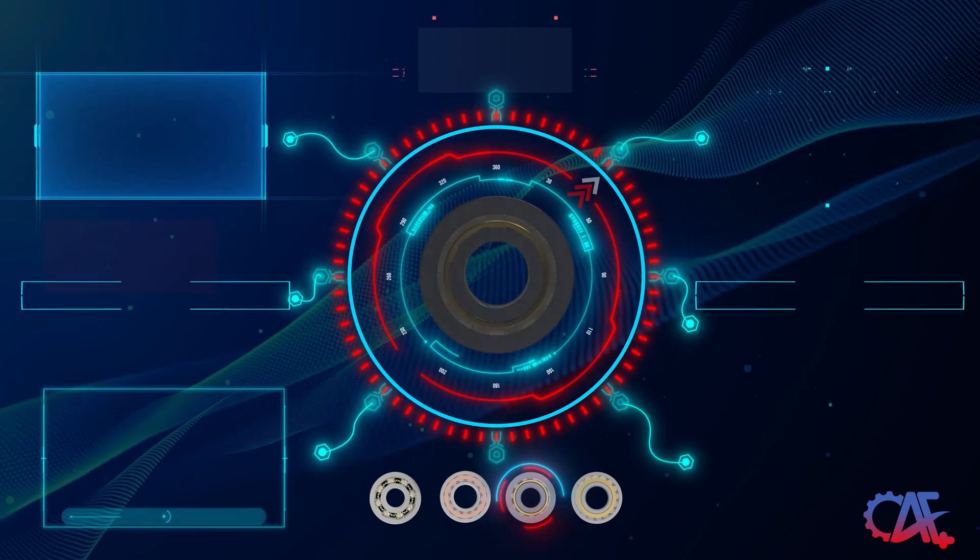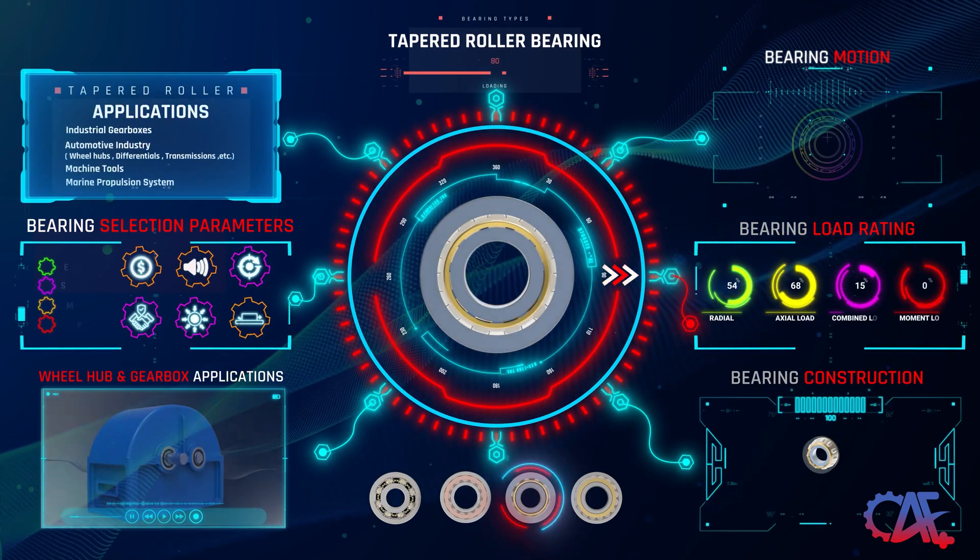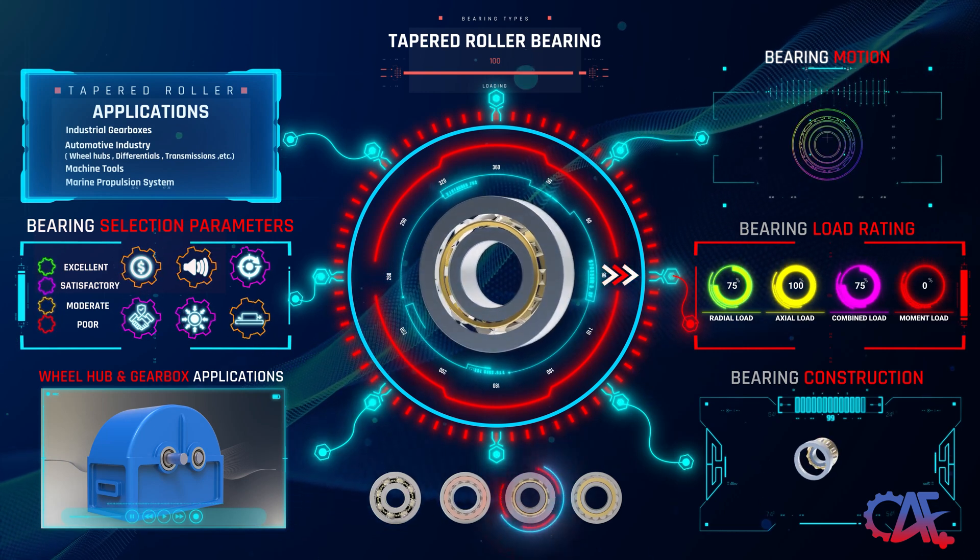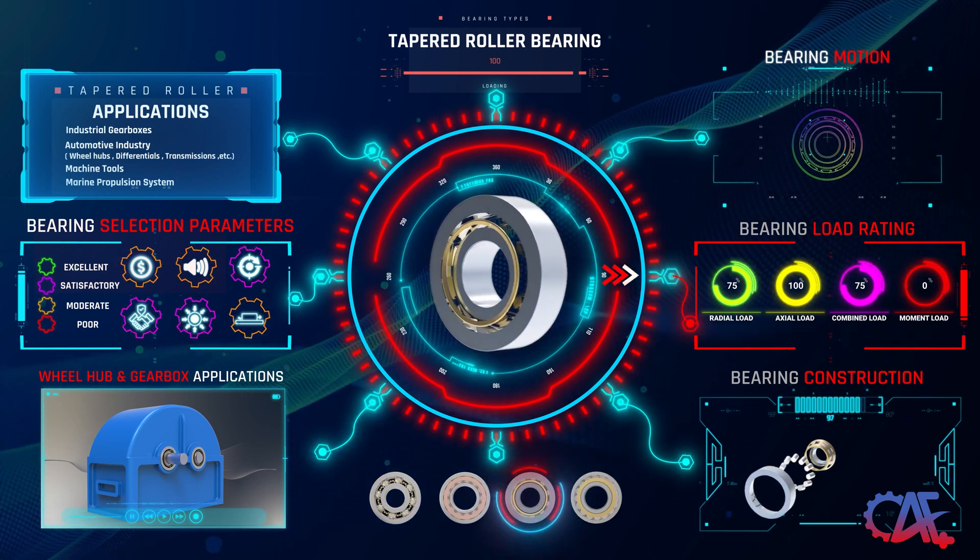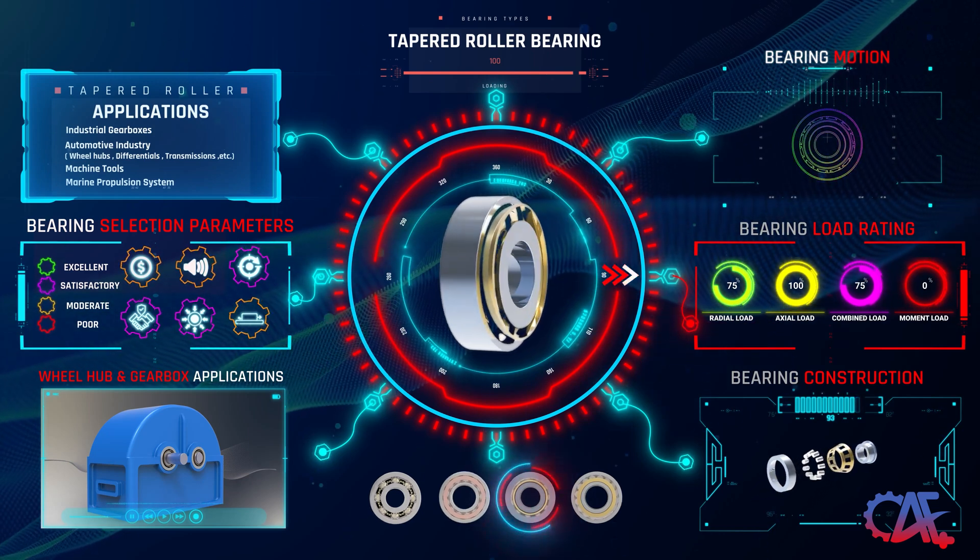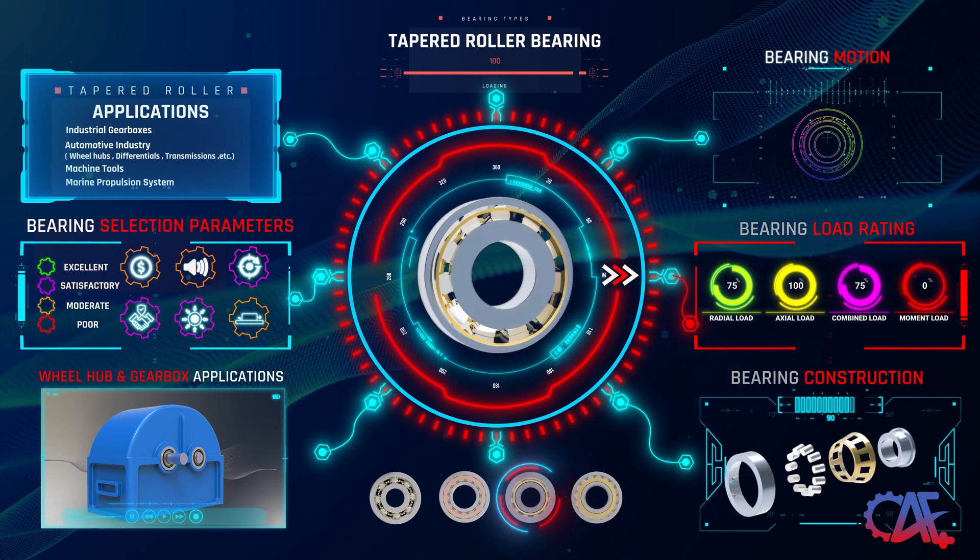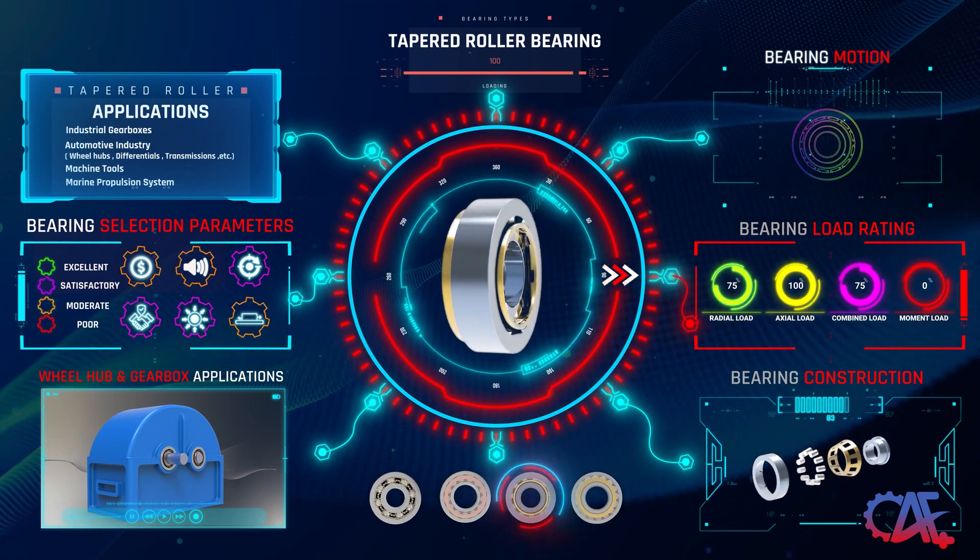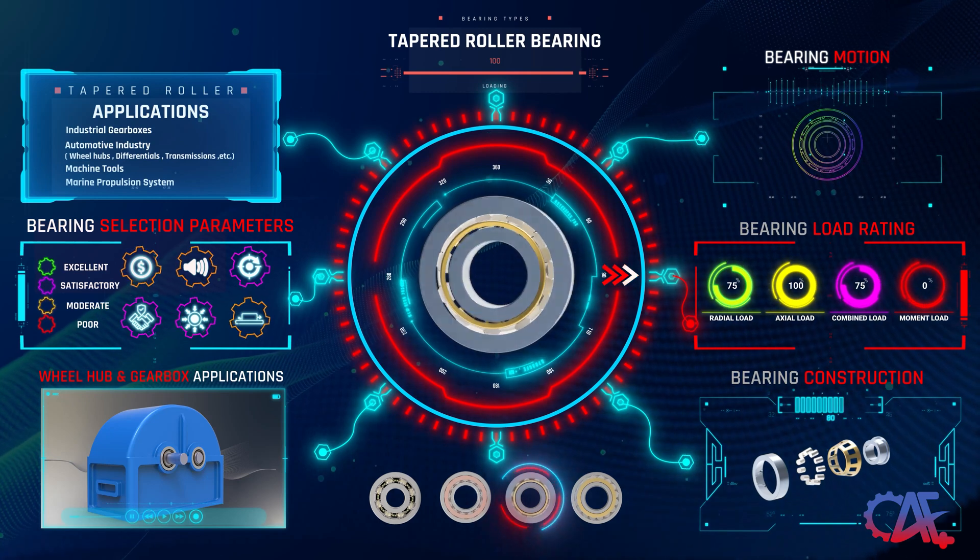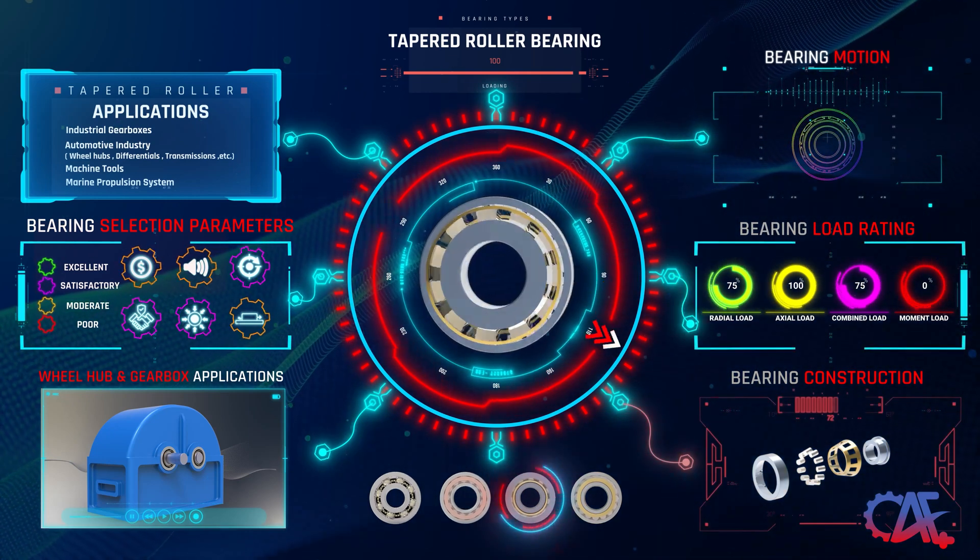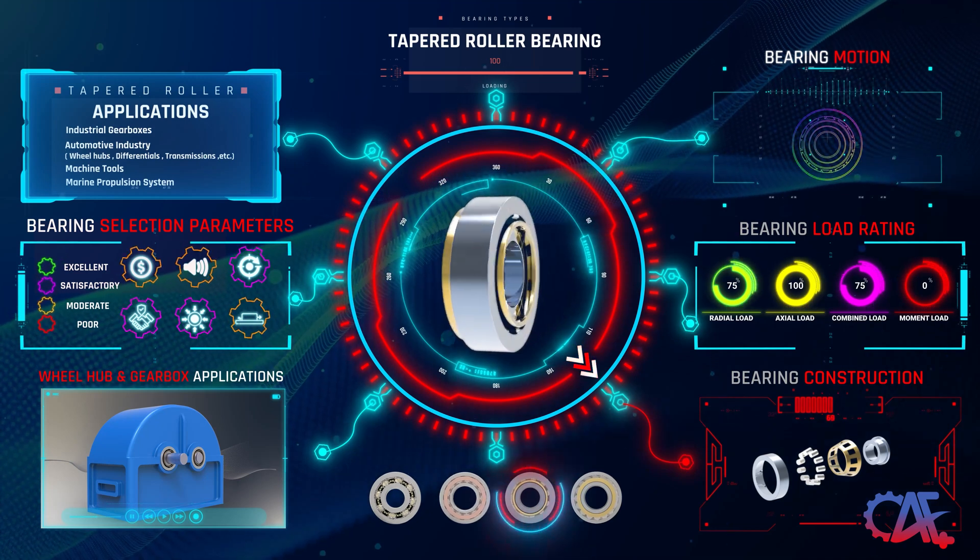In our next bearing selection choice, we will pick the tapered roller bearing. Unlike standard roller bearings, tapered roller bearings are designed with an angular shape that enables them to effectively handle axial loads. One distinct feature of tapered roller bearings originates from its capability to handle significant axial loads in addition to radial loads. In terms of load capability, these bearings excel at handling axial loads, perform well at managing both radial and combined loads.